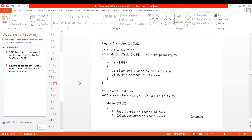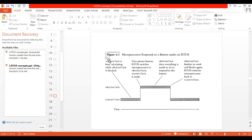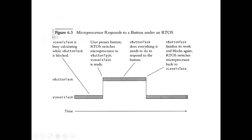Now we'll see how we switch from one task to another task using this diagram. This diagram is very useful for understanding. The topic is: microprocessor responding to a button under RTOS. This is a graphical way to understand RTOS — how your microprocessor executes the level task and the button task, and how it switches from running state to block state, from block state to ready-to-run state, and from ready-to-run state back to running state.